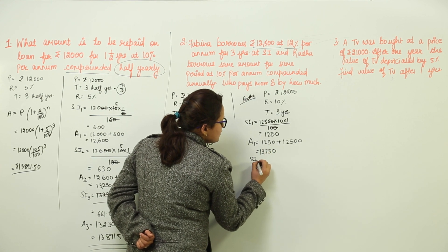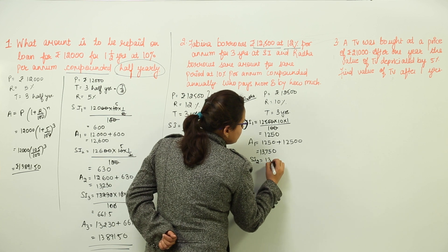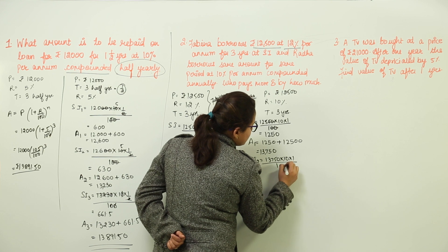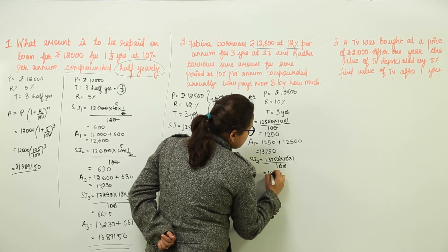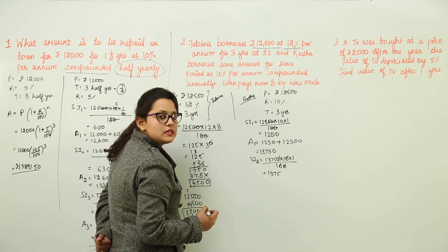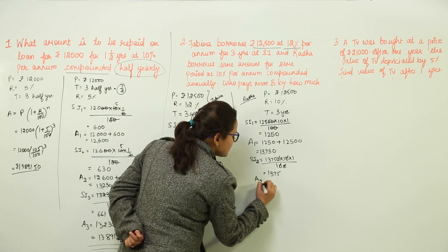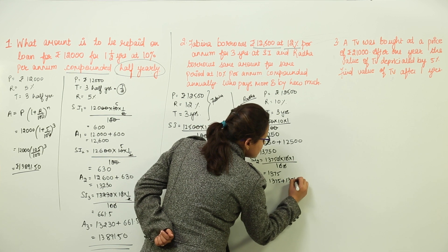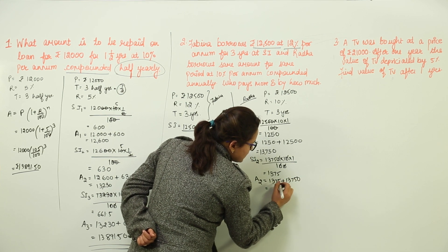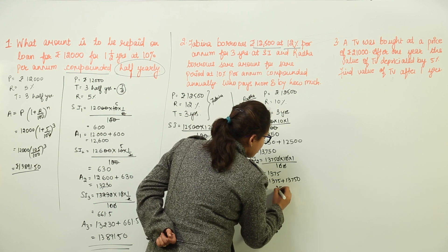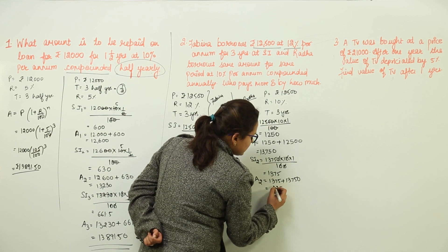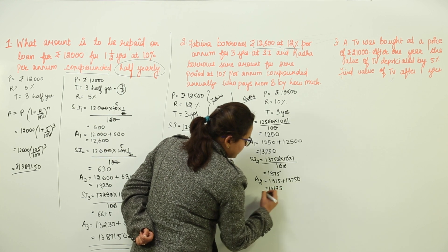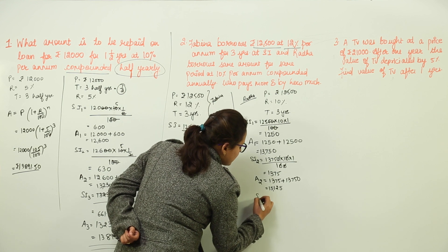The amount after the first year = 12,500 + 1,250 = Rs. 13,750. This becomes the principal for the second year. Simple interest for second year = 13,750 × 10 × 1 / 100 = Rs. 1,375. Amount after second year = 13,750 + 1,375 = Rs. 15,125.